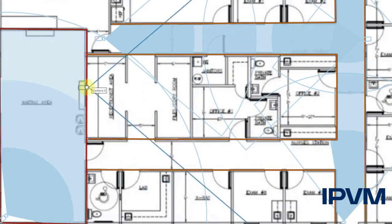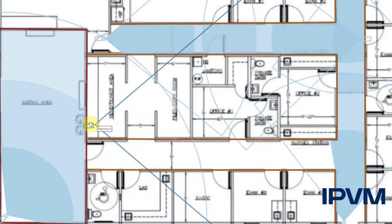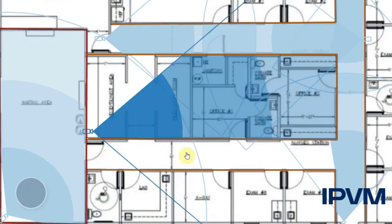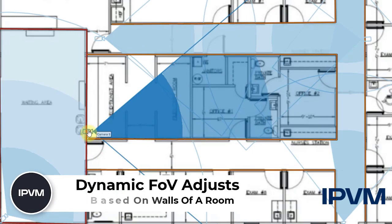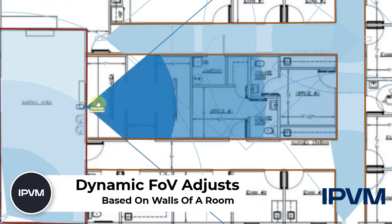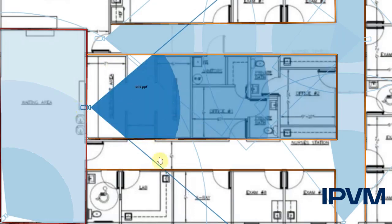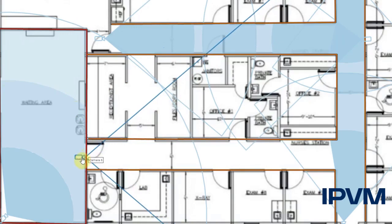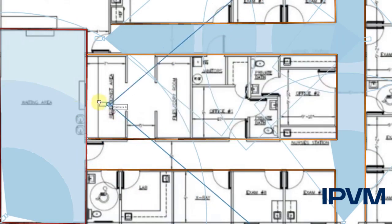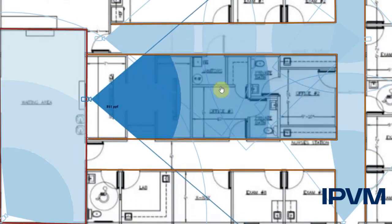Conversely, if we have a camera within this area, I can move the camera within there, and then it blocks anything outside into the hallway. So it essentially works both directions exactly the same — however you lay out your cameras, it will be accurate.